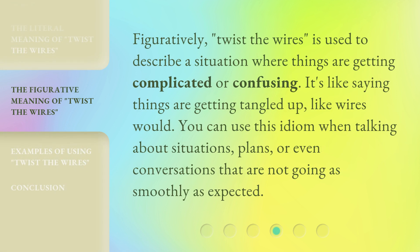Figuratively, 'twist the wires' is used to describe a situation where things are getting complicated or confusing. It's like saying things are getting tangled up, like wires would. You can use this idiom when talking about situations, plans, or even conversations that are not going as smoothly as expected.